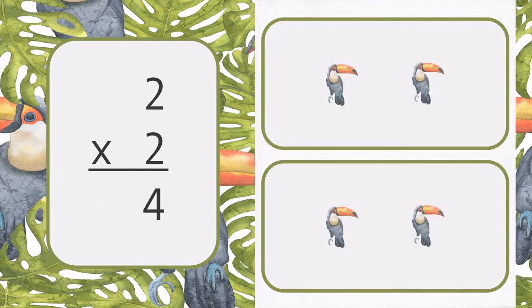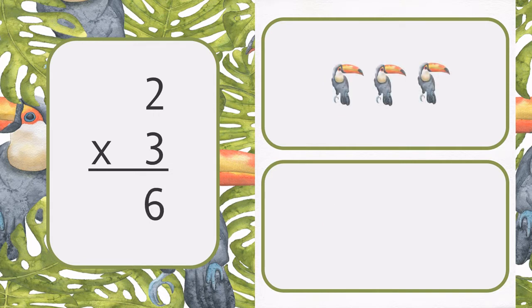There are two groups of 2. 2 times 2 is 4. There are two groups of 3. 2 times 3 is 6.